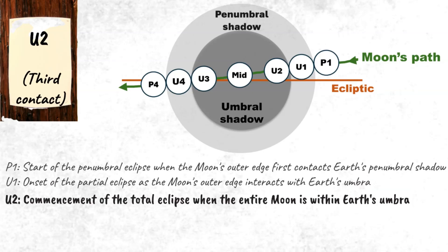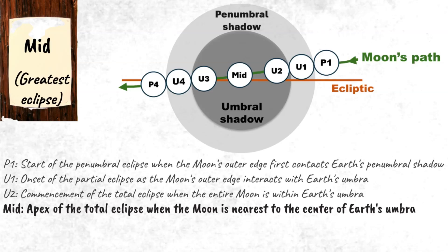Contact point U2, or the third contact, marks the commencement of the total eclipse when the entire Moon is within Earth's umbra. Mid contact point, or the greatest eclipse, is the peak of the total eclipse when the Moon is closest to the center of Earth's umbra.